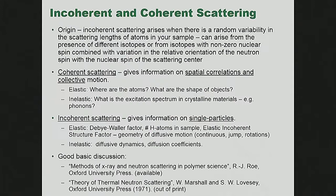Incoherent and coherent scattering. Incoherent scattering happens any time there is random variability in the scattering lengths of the nuclei in your sample. That can come about in several ways: different atoms with different scattering lengths, different isotopes of the same element, or scattering from isotopes with non-zero nuclear spin — like a hydrogen atom that's spin-half, basically a proton. If you have a non-zero nuclear spin and a random distribution of relative orientations of the nuclear and neutron spin, you'll also get incoherent scattering.